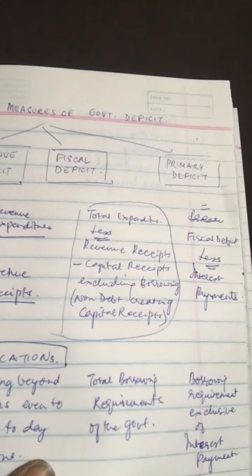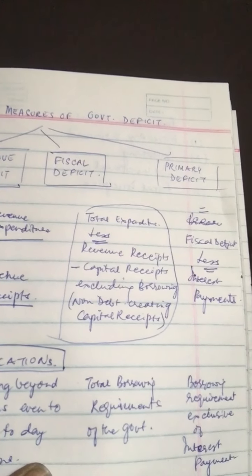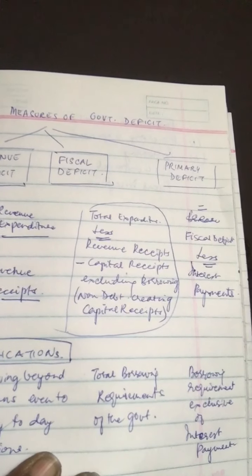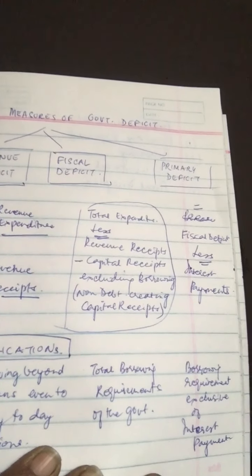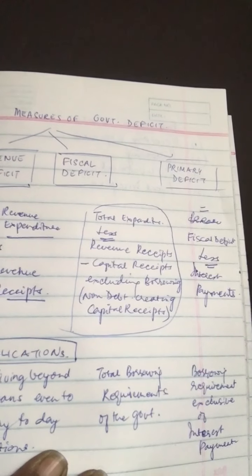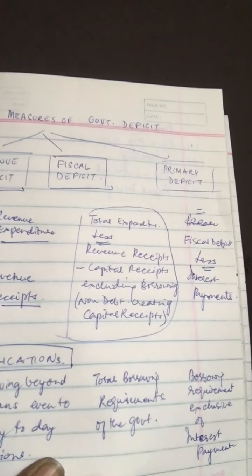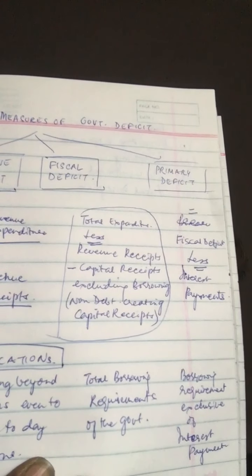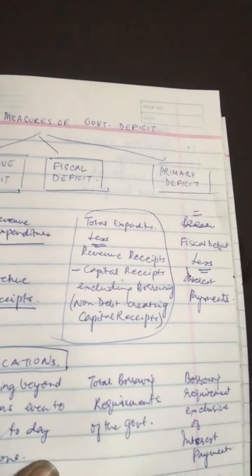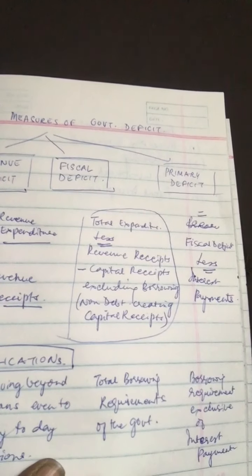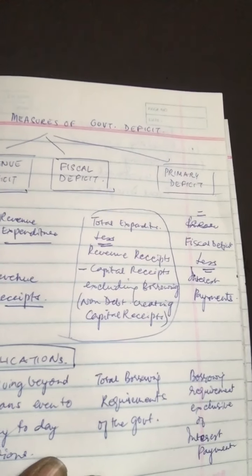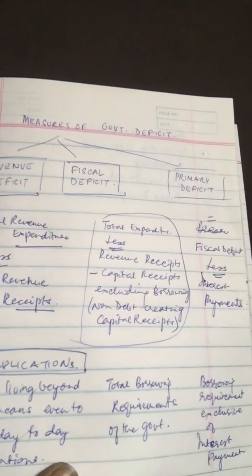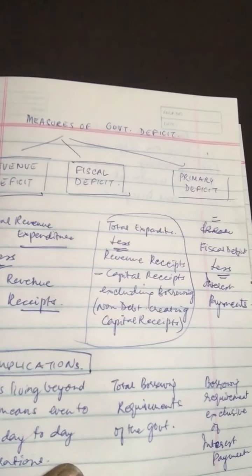The third type of deficit calculated for the Indian budget is the primary deficit. Primary deficit equals fiscal deficit less interest payments. The primary deficit indicates how much government borrowing is going to meet expenses other than interest payments. A high primary deficit indicates fiscal irresponsibility of the government, while a low primary deficit implies that the government is borrowing largely to make previous interest payments.